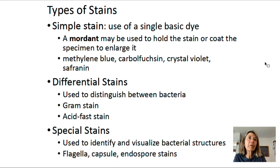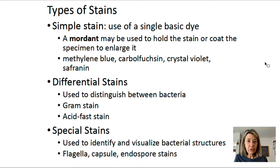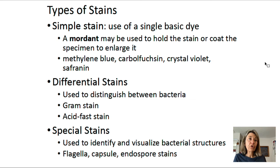There are different types of stains. A simple stain uses only one stain and is used when you want to observe the shape and arrangement of a single cell population. Differential stains distinguish between bacteria — the two most important are the Gram stain and the acid-fast stain. Special stains visualize certain structures, such as flagella, capsule, and endospore stains.